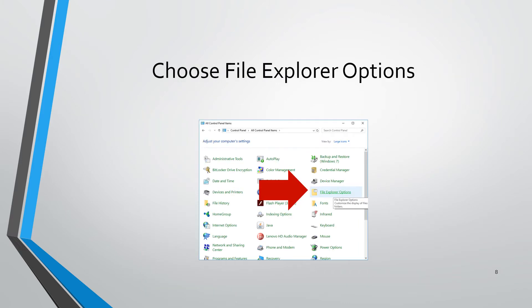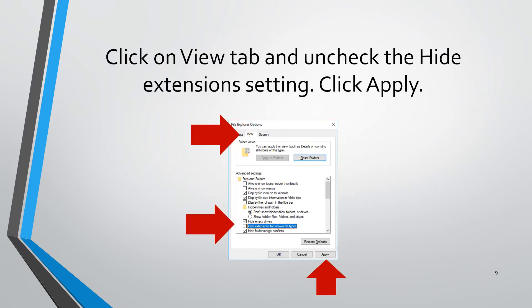Next find and click on the file explorer options icon. When the file explorer options dialog box pops up, go to the view tab, find the checkbox that says hide extensions for known file types and unselect it. Make sure it's not checked and then click the apply button at the bottom.